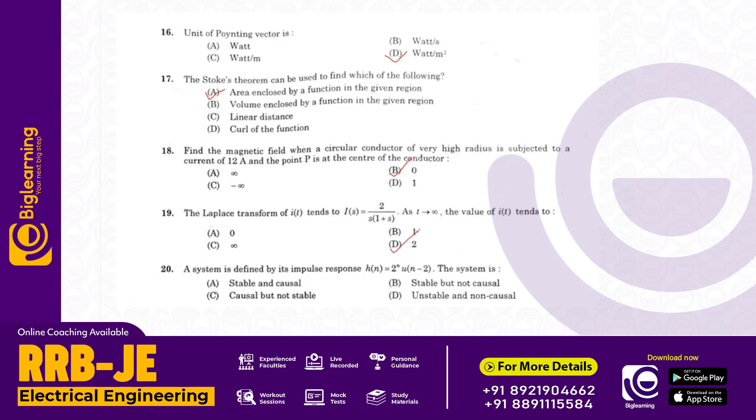A system is defined by impulse response h of n equals 2 raised to n u n minus 2. The system is causal but not stable. Answer A.